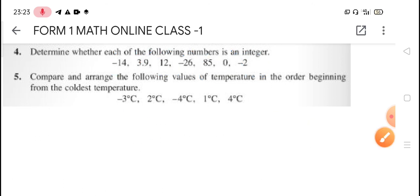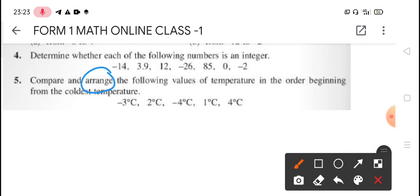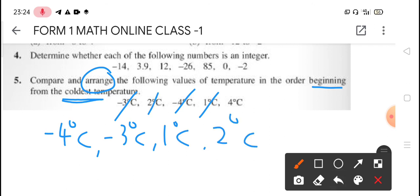Next, number 5, compare and arrange. Arrange from coldest, beginning from the coldest. Coldest means the lowest. So we start from the lowest, negative 4. Next, negative 3, continue with 1, and continue with 2 degrees Celsius. Lastly, 4 degrees Celsius. So class, this is the answer and solution for the homework for our first online class.